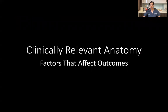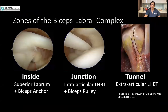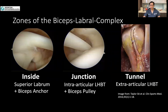We have to remind ourselves what the clinically relevant anatomy is, because these are the factors that will eventually affect the outcomes. It has been suggested that the biceps be divided into three separate zones. The biceps labral complex is divided into the inside zone, which is made up of the superior labrum as well as the biceps anchor; the junctional zone, which is the intra-articular long head of biceps tendon as well as the biceps pulley; and the bicipital tunnel, which is the extra-articular long head of biceps tendon.